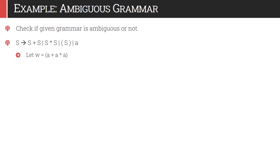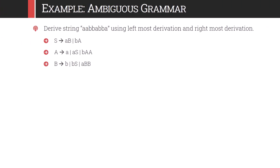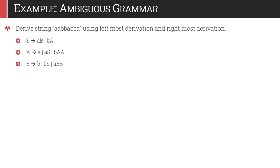Consider another example: check if the given grammar is ambiguous or not, where grammar is S gives S plus S, or S into S, or S within parentheses, and a. Our string is (a plus a) into a. We can have one possible parse tree, and another possible parse tree, and hence the given grammar is ambiguous as we have two different parse trees for the same string.